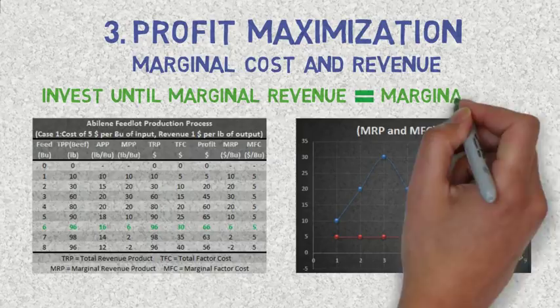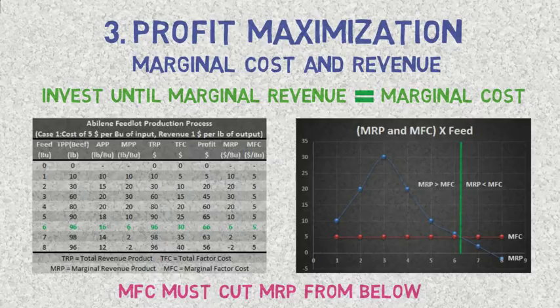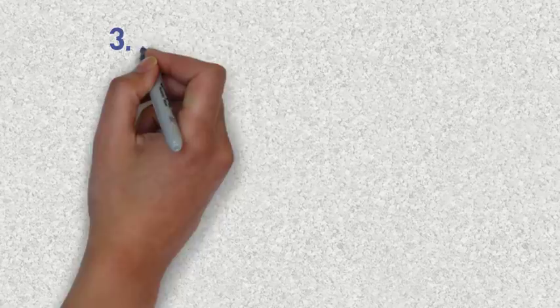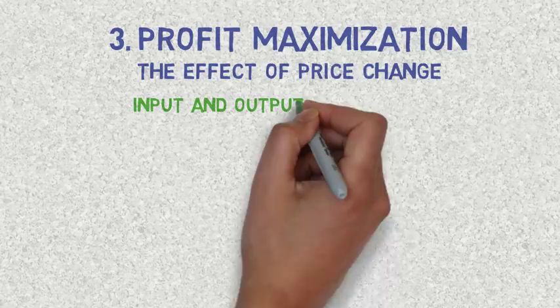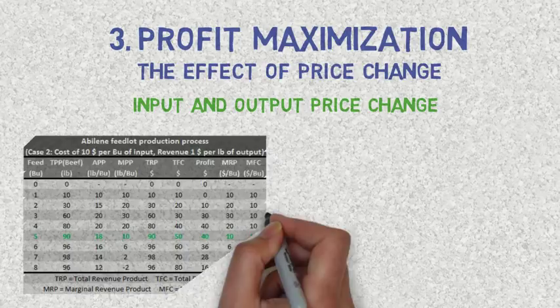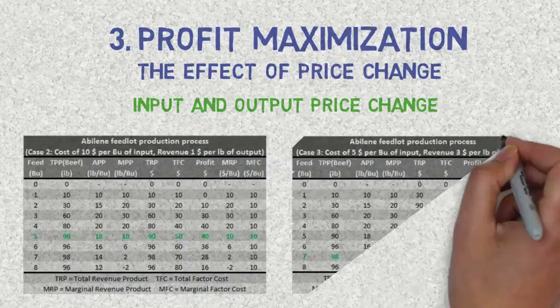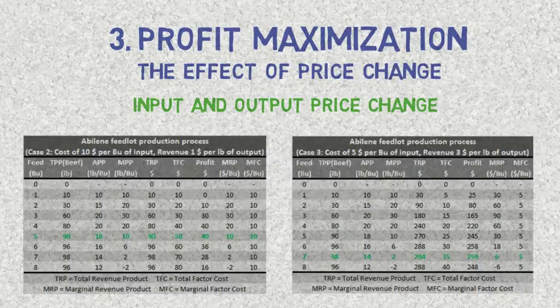When analyzing the marginal cost and marginal revenue curves, the maximum profit is obtained right before marginal revenues equal marginal costs. The marginal cost curve must cut the marginal revenue curve from below. It is rational to invest as long as marginal revenues are greater than marginal costs. If the input price rises to $10 per bushel, the optimal input level changes and the farmer should use 5 bushels instead of 6. If instead the price paid per pound of meat changes while input costs remain the same, the optimal input level also shifts — the farmer would use 7 bushels instead of 6 to maximize profits.